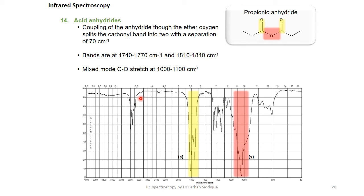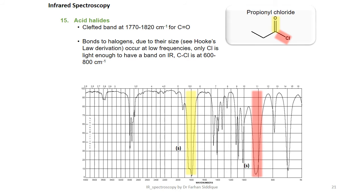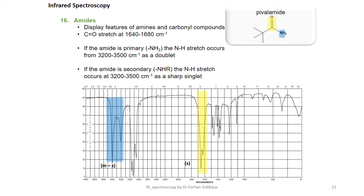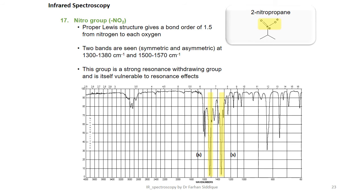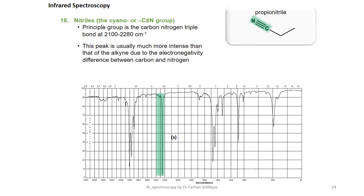Acid anhydride has bands at 1740 to 1770 in yellow and mixed mode C-O stretch at 1000 to 1100. Similarly in acid halides the halogen group is shown in the fingerprint region 600 to 800. In amides N-H stretch from 3200 to 3500. In nitro group NO2 two bands from 1300 to 1380 and 1500 to 1570 strong due to the withdrawing group. Nitriles show a band between 2100 to 2080.